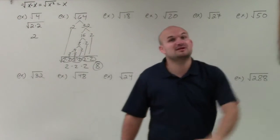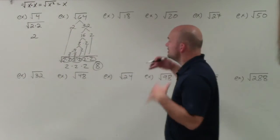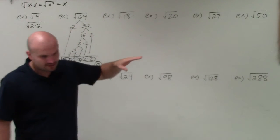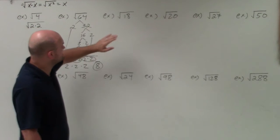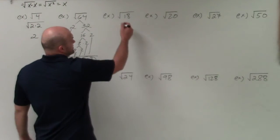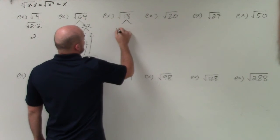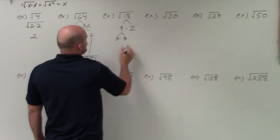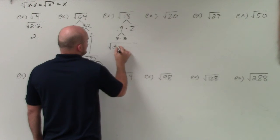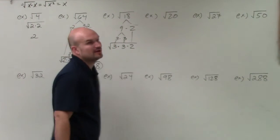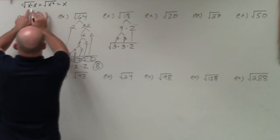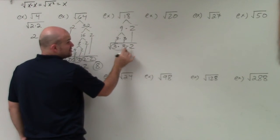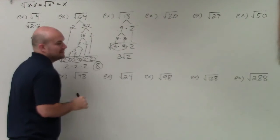The more difficult problems are the ones where our radicand is not a perfect square number, so we can always fall back on prime factorization. For the square root of 18: break it down into 9 times 2, then 3 times 3. So the square root of 18 is the same as the square root of 3 times 3 times 2. The square root of 3 times 3 is just 3. However, the 2 can't be simplified, so it remains under the radicand, giving us 3√2.